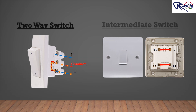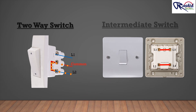In the intermediate switch, once the knob is downward, terminal L1 connects to terminal L4, and terminal L2 is connected to terminal L3. Alternatively, once the switch button is up, the terminal contacts will attach terminal L1 through terminal L3. Similarly, terminal L2 will connect through terminal L4, as shown in the following figure.